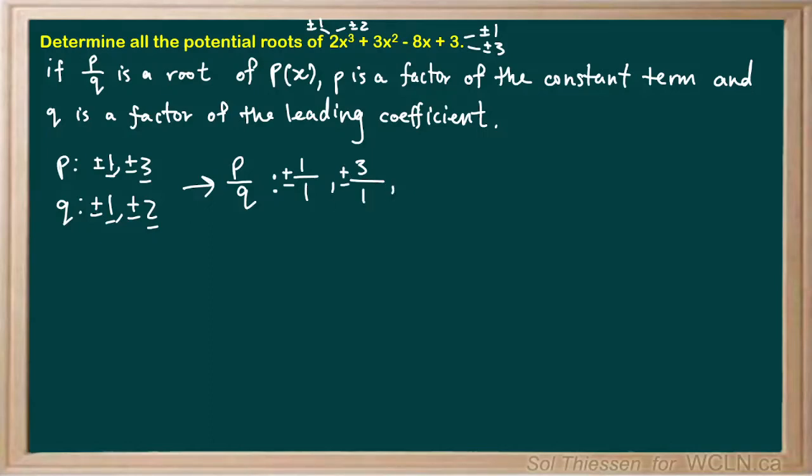Next, I'll go back to 1 in the p value and move to 2 in the q value, giving us 1/2. Again, we add plus or minus. Then I'll move to 3 in the p value and remain with 2 in the q value, giving us 3/2. Again, that is plus or minus.